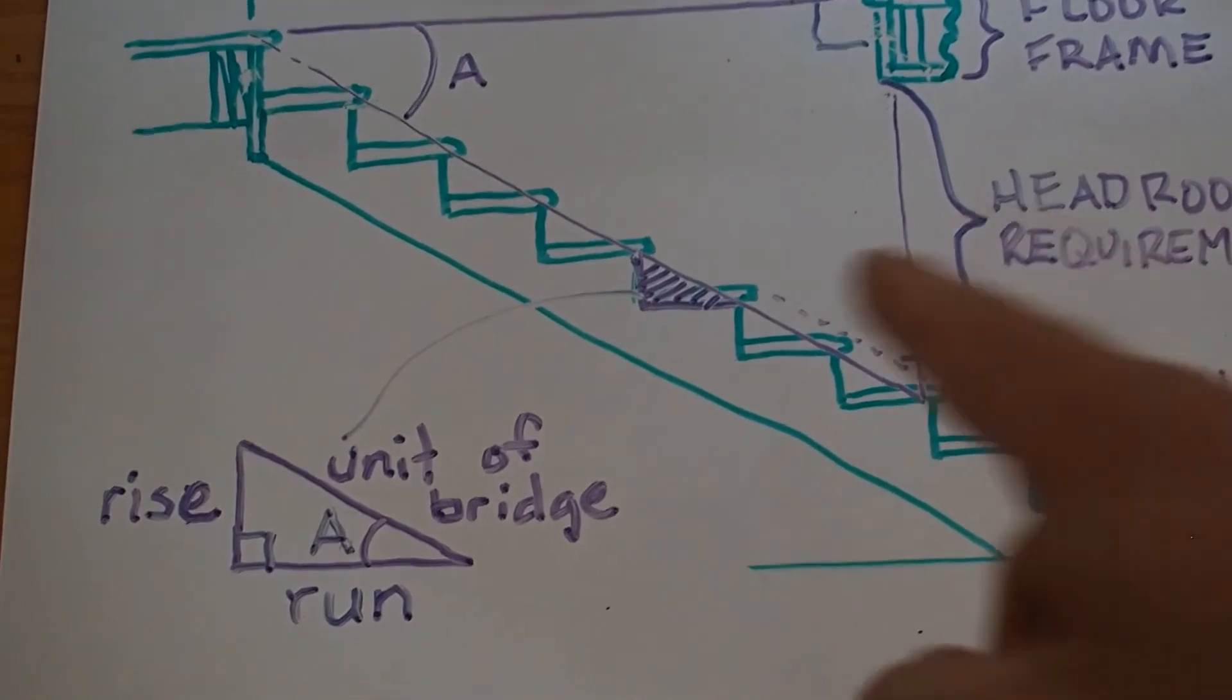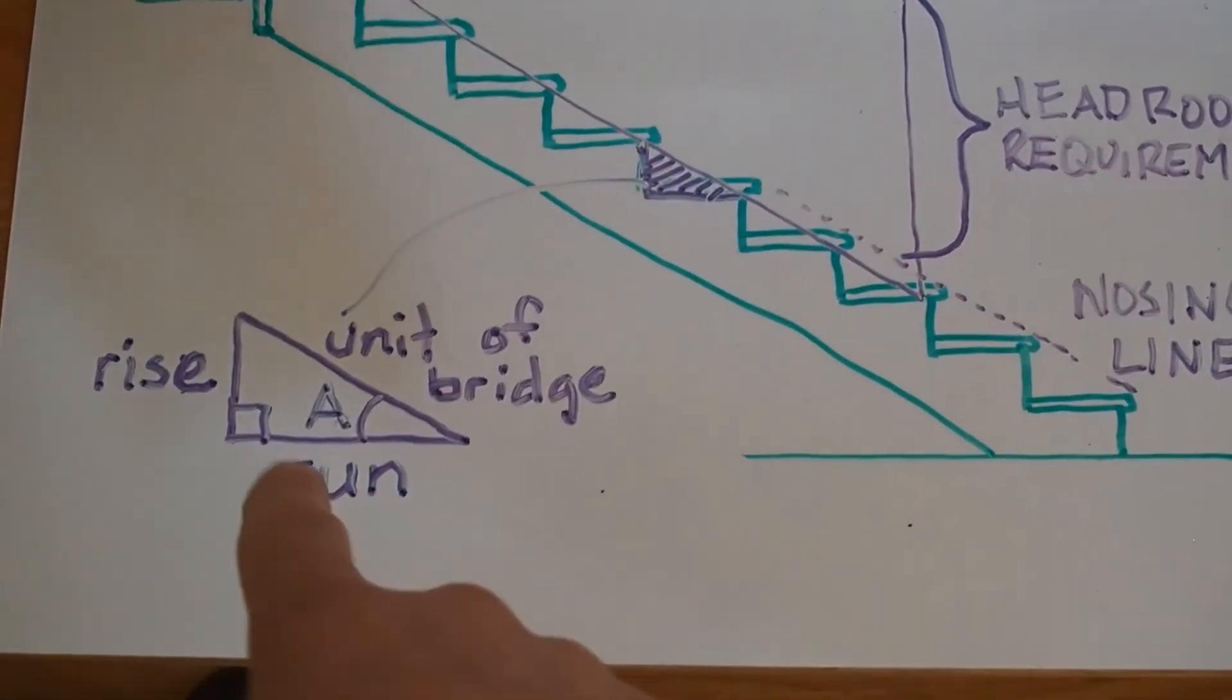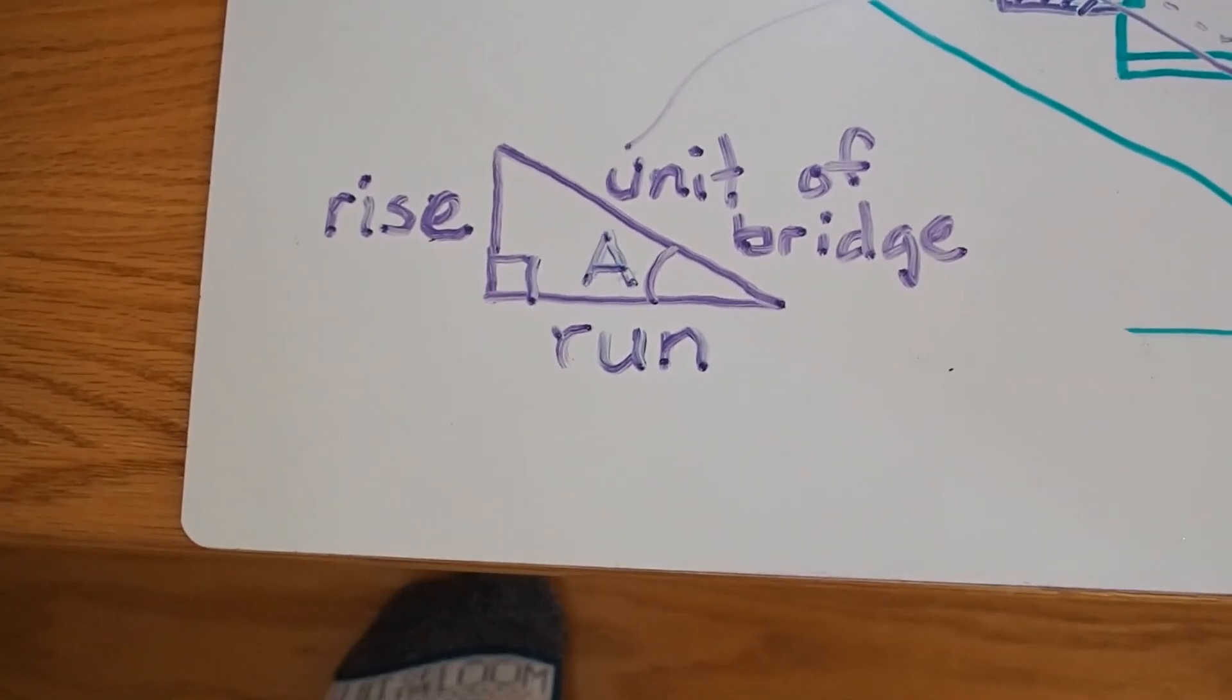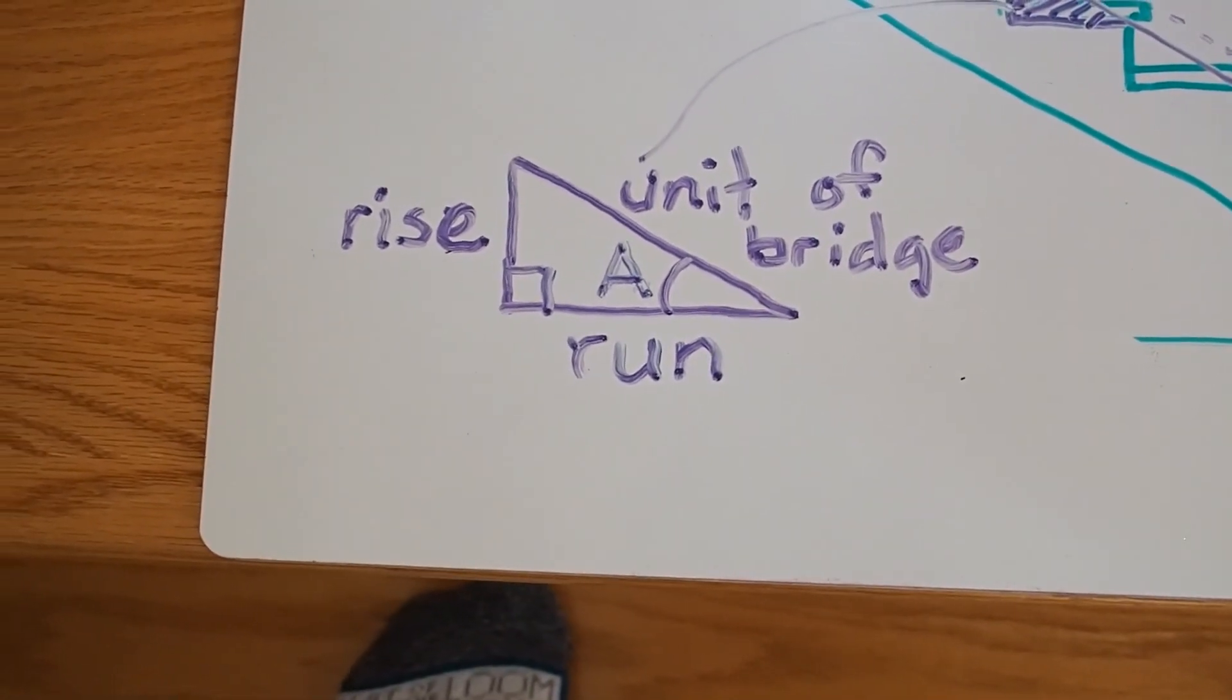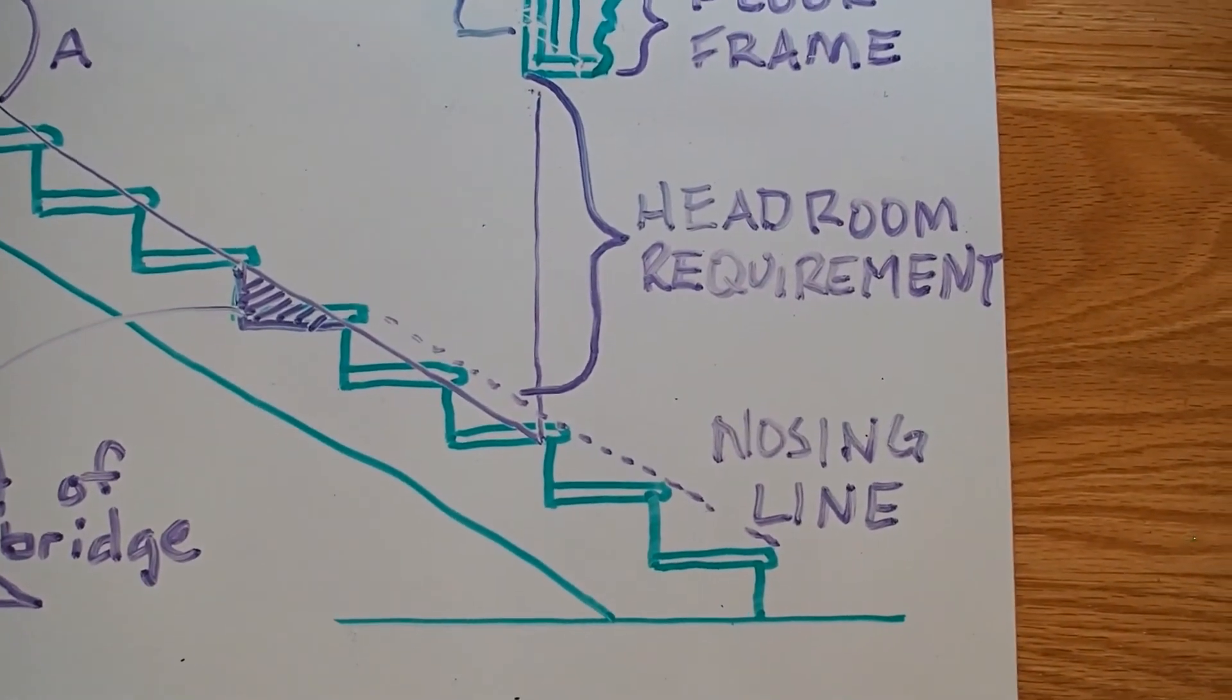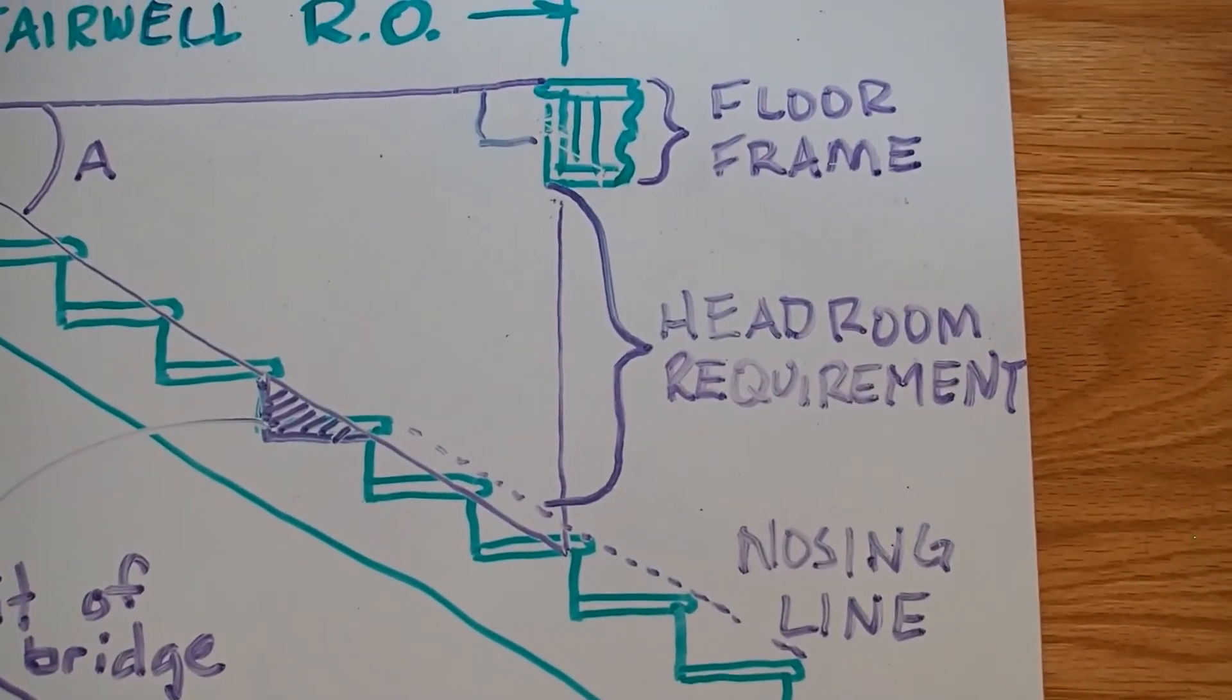And I've also shaded in one of the stairs. So that's a small triangle that's made up of the rise, the run, and the unit of bridge. The headroom requirement is the distance from the nosing line, which is the dashed line, to the finished ceiling up above.